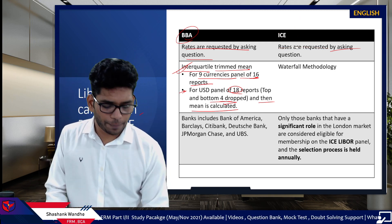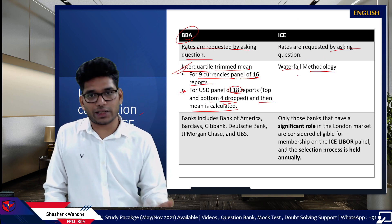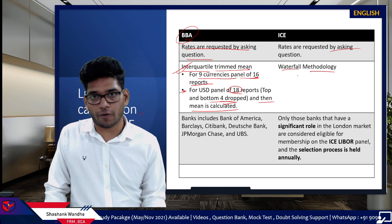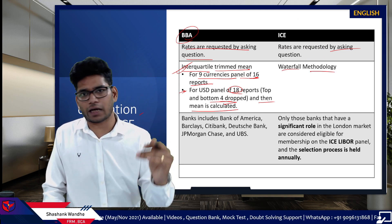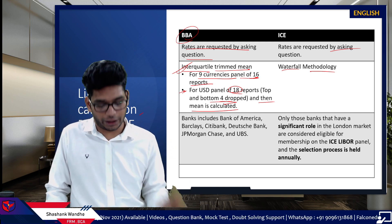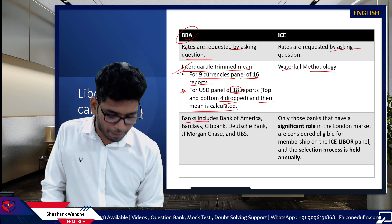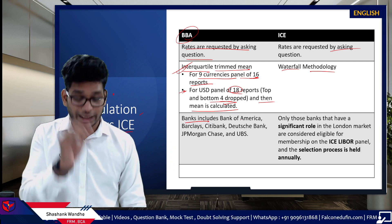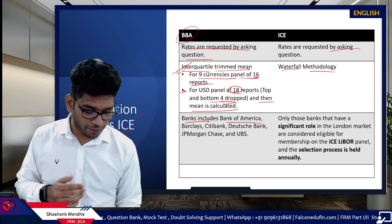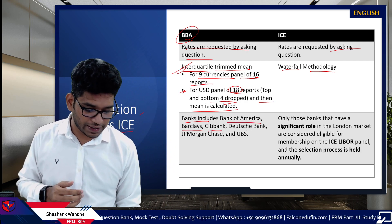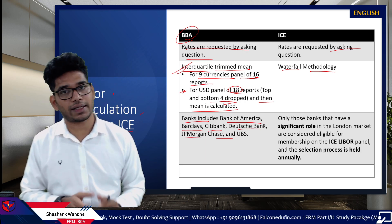In the ICE, the process is quite complicated and is known as the waterfall methodology — there are multiple steps for the calculation of LIBOR after it is collected. The banks in the BBA panel included Bank of America, Barclays, Citibank, Deutsche Bank, JP Morgan Chase, UBS, and others.